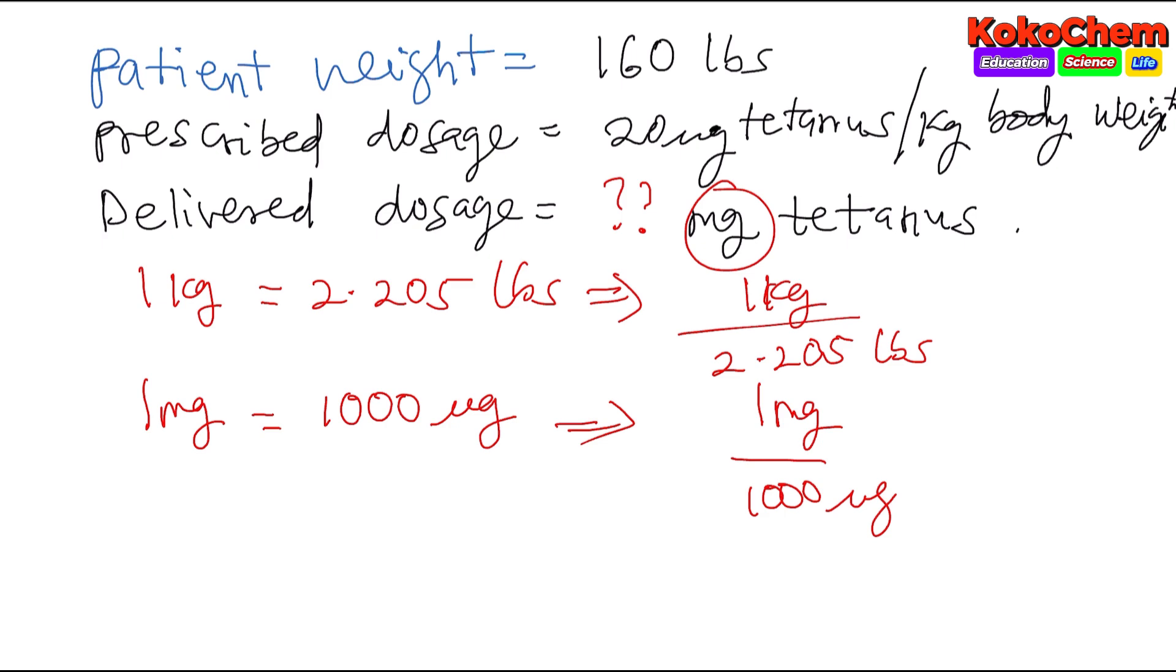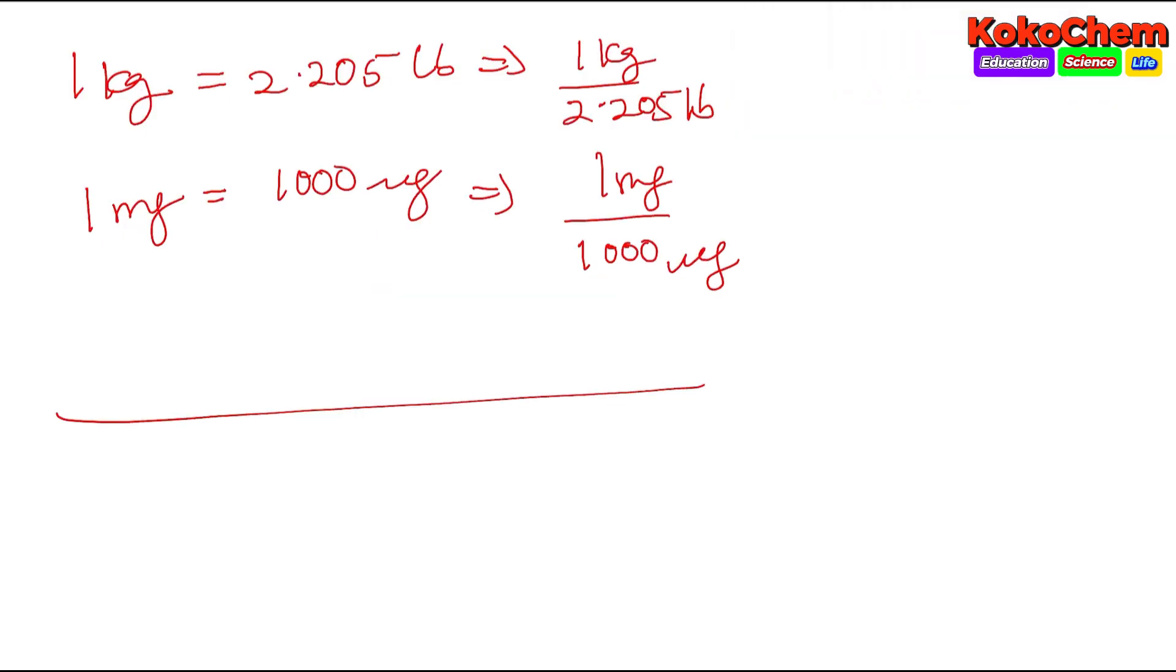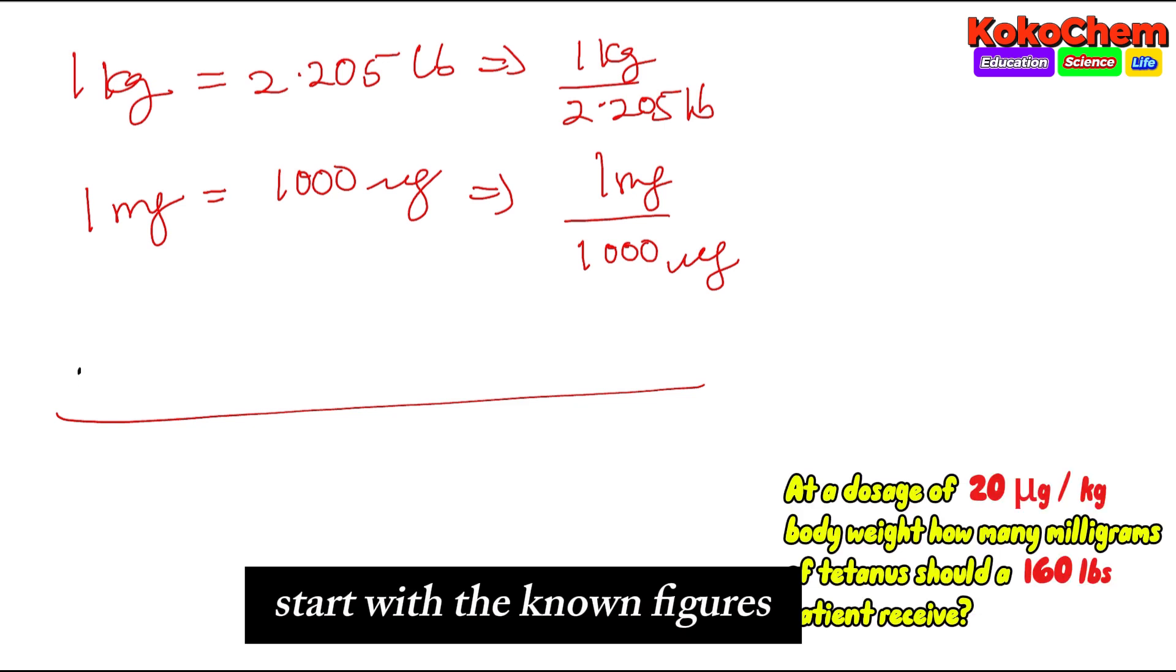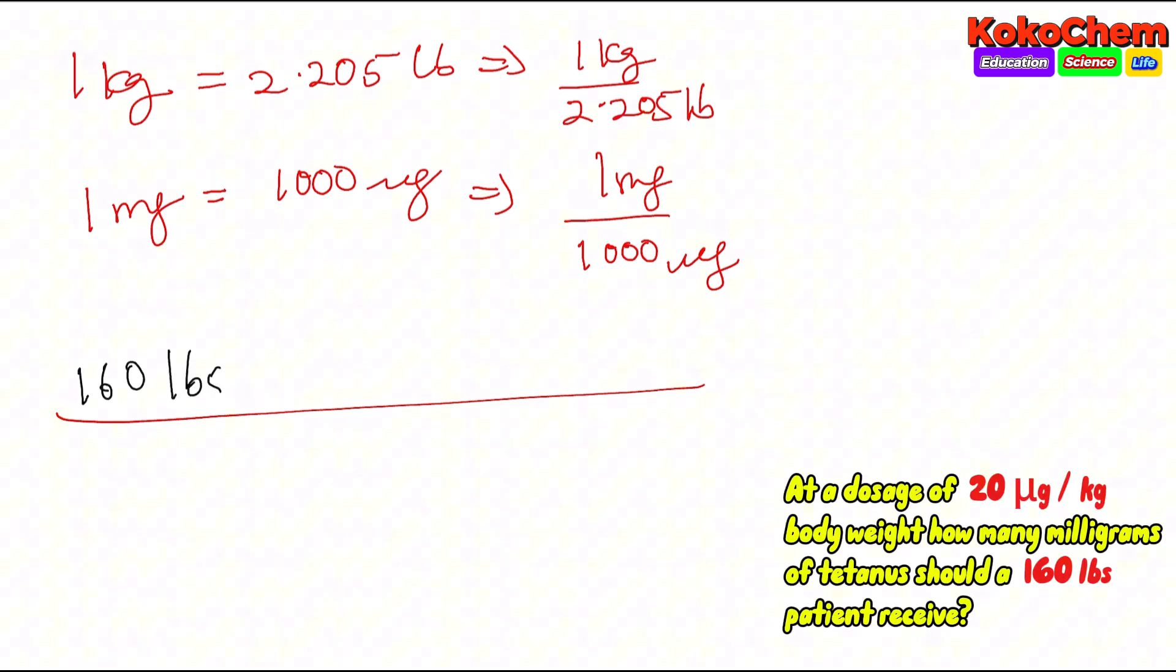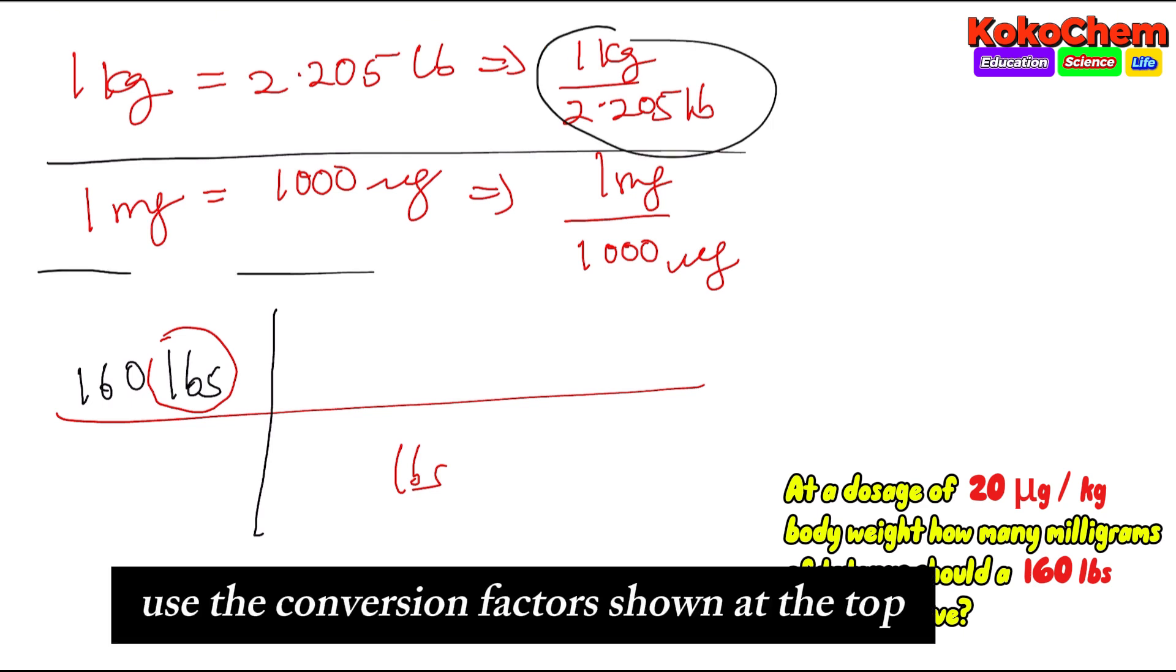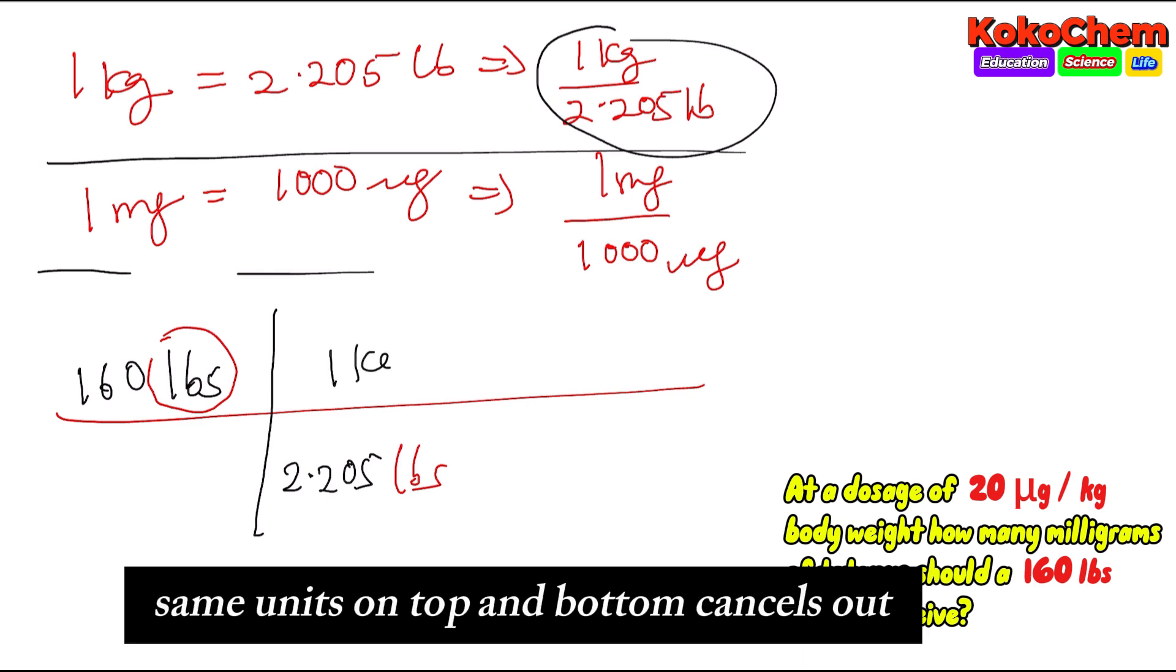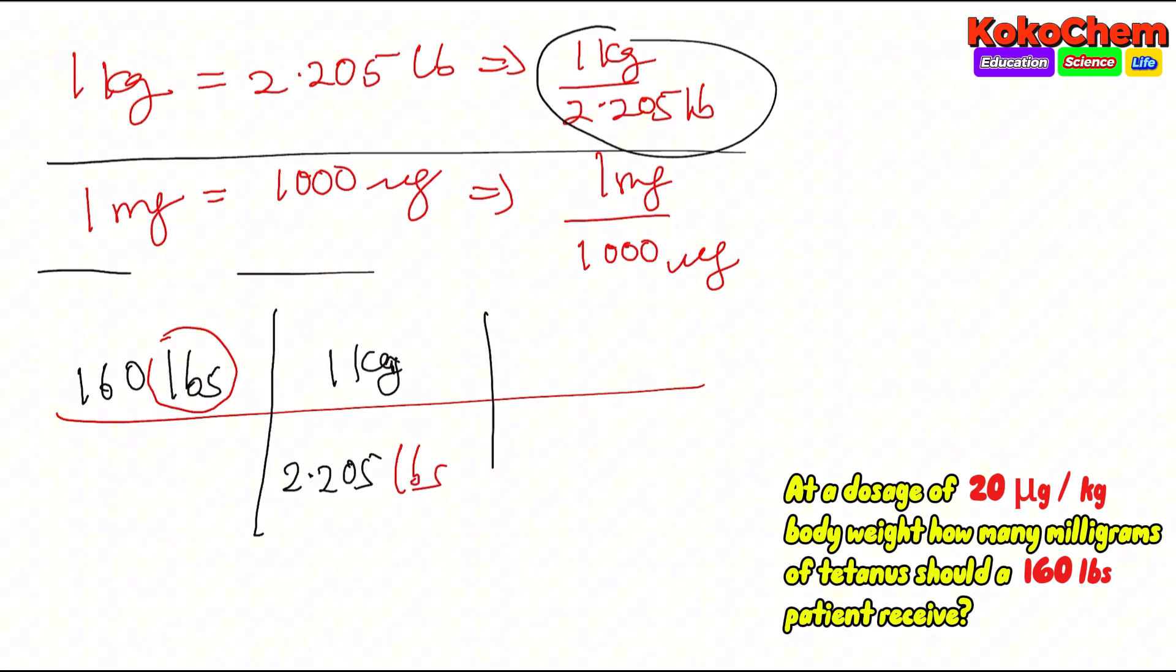We start with 160 pounds. Put pounds on the bottom so pounds will cancel pounds. Use the conversion factor: 2.205 pounds equals one kilogram on top. Pounds will cancel and kilogram appears.